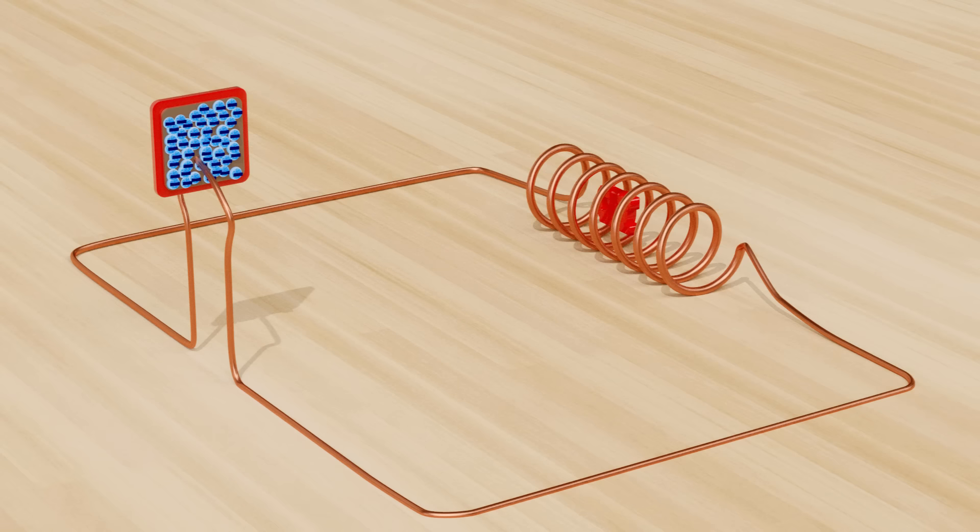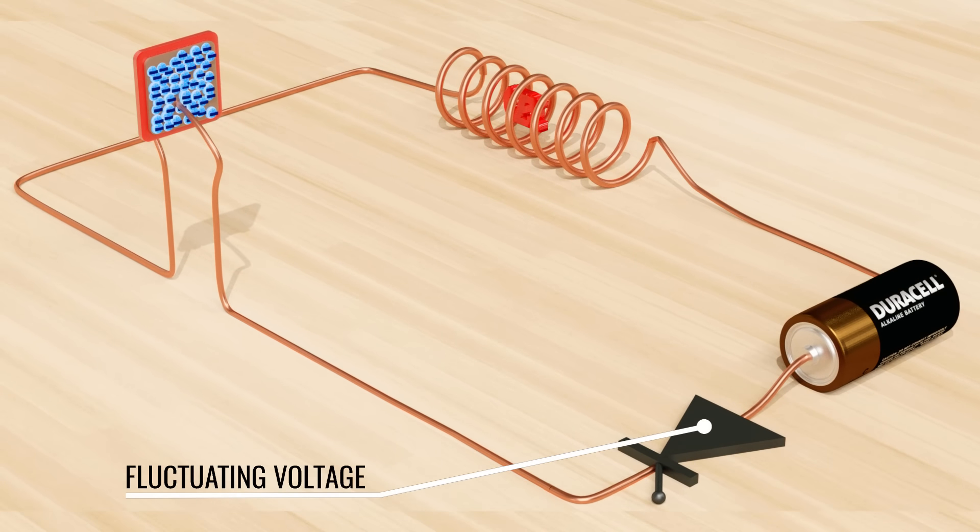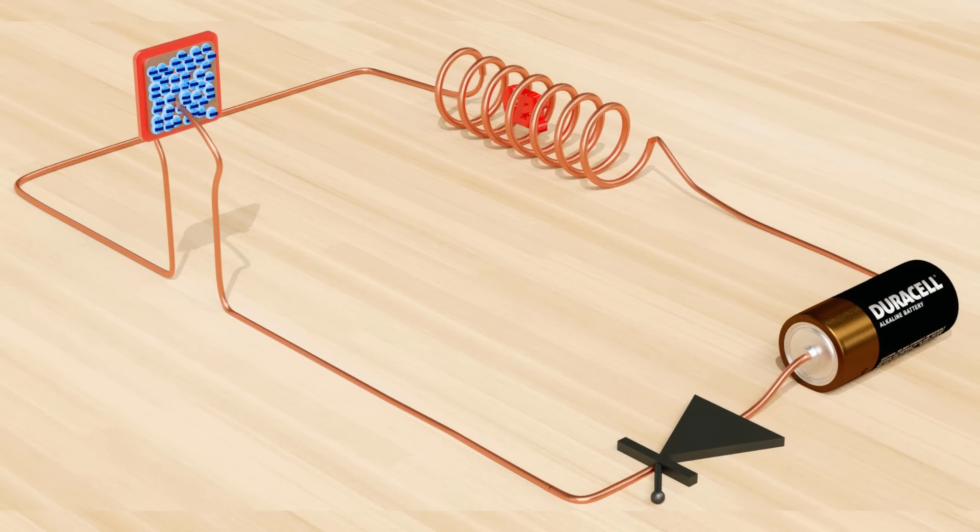If we insert the thyristor circuit into this LC circuit, the thyristor will be subjected to fluctuating voltage instead of a steady voltage. In the reverse biased voltage mode, the thyristor will definitely turn off.